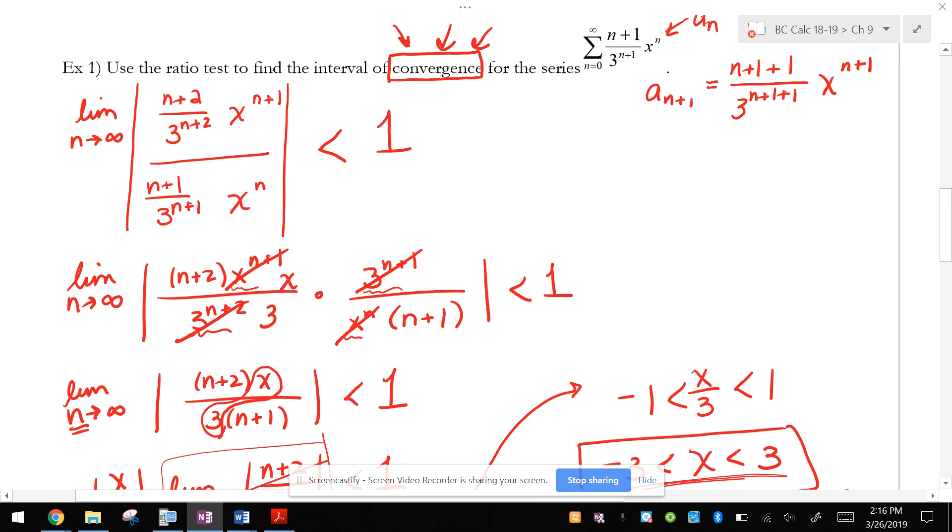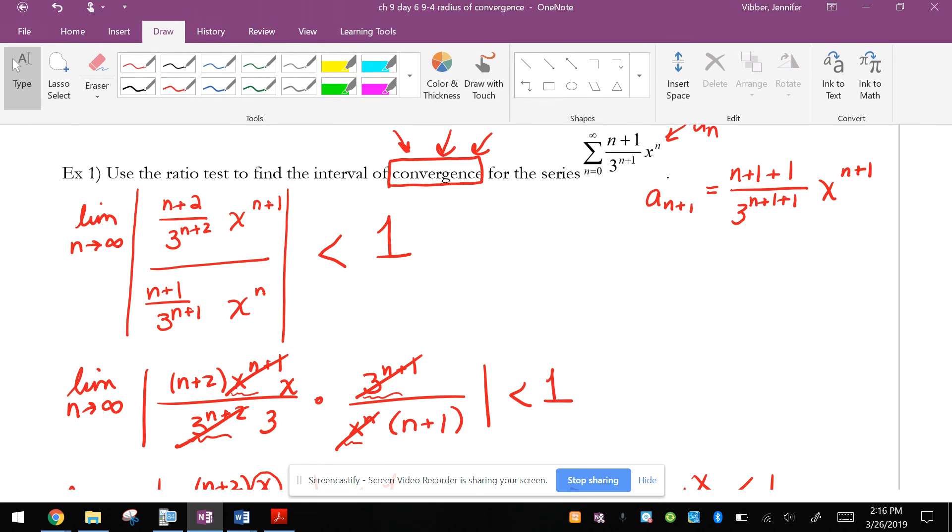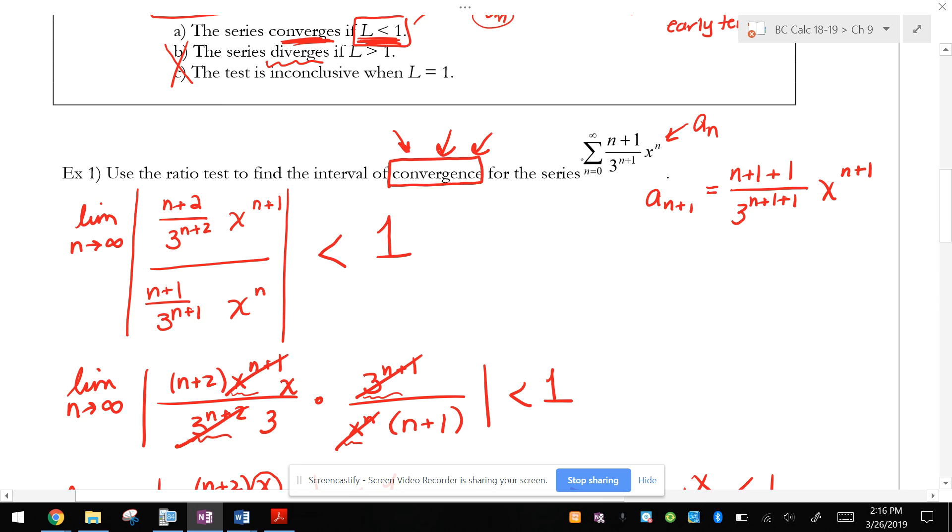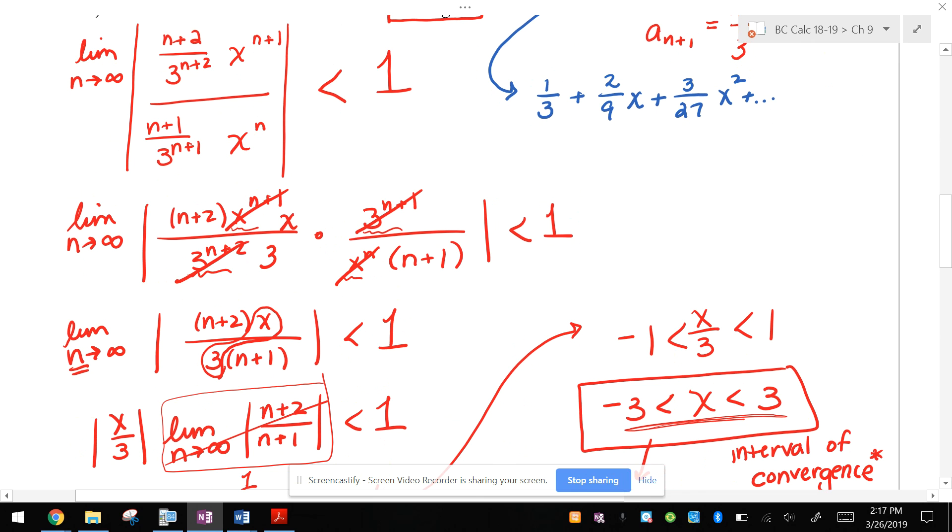So what that's telling me is that if I were to write out this series, and you don't have to write it out, but if I were to write out this series, let's see, when n equals 0, that's going to be 1 third x to the 0. If n equals 1, that's going to be 2 ninths x. If n equals 2, that's going to be 3 27ths x squared. That series, whatever it mimics, it mimics the other thing on the window from negative 3 to 3.